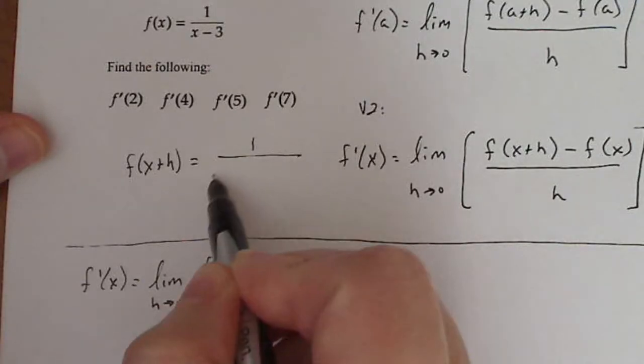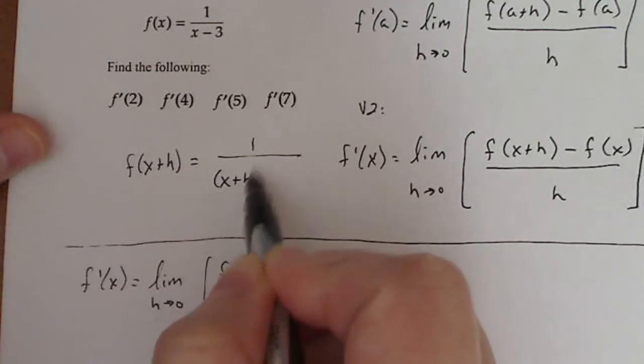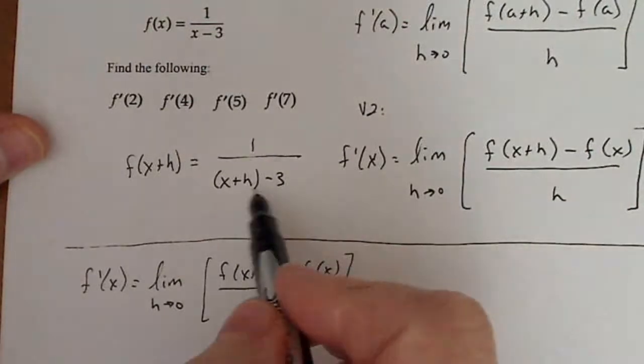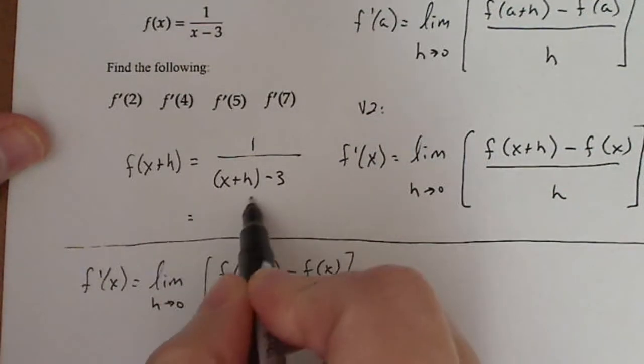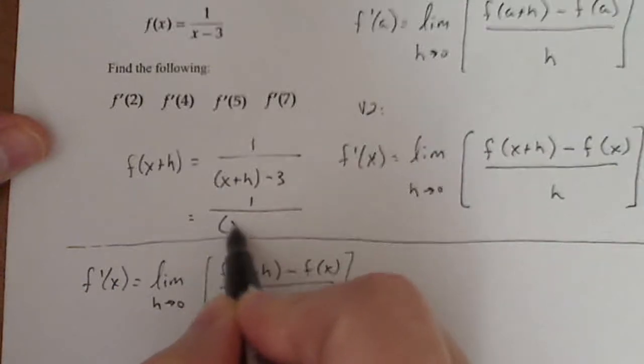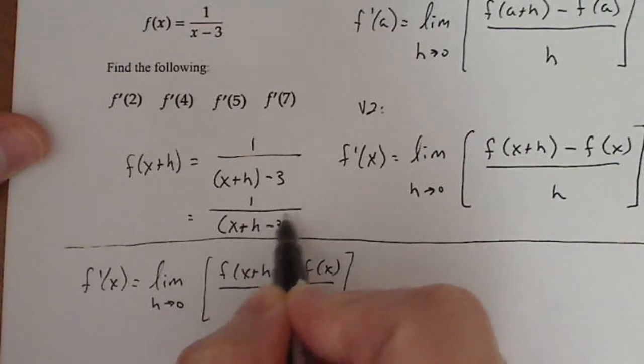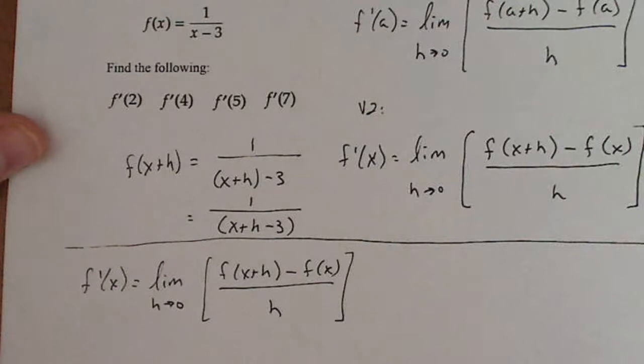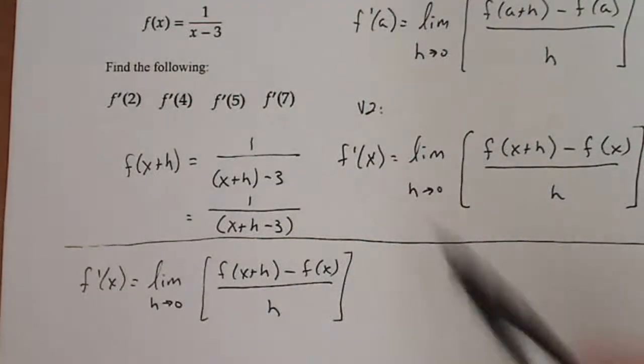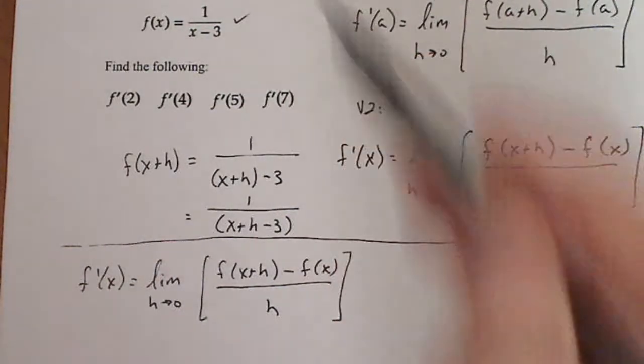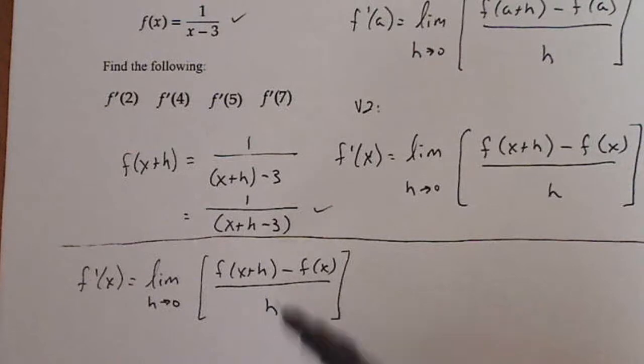So it's going to be one over x plus h minus three. Now there's nothing that I can combine down there at the bottom. So I'm just going to think of this as one divided by the single quantity x plus h minus three. And it does help in solving the algebra, simplifying the algebra.